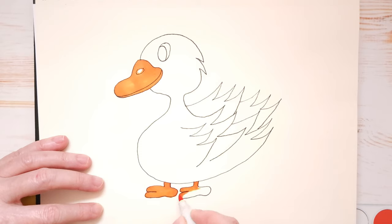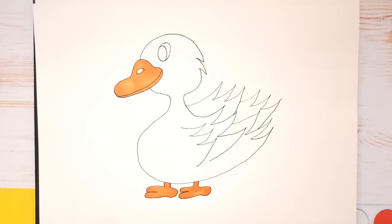A baby goose is called a gosling. That's what it's called, a gosling. You know, like if you have a baby duck, it's called a duckling while a baby goose is called a gosling. There we go.